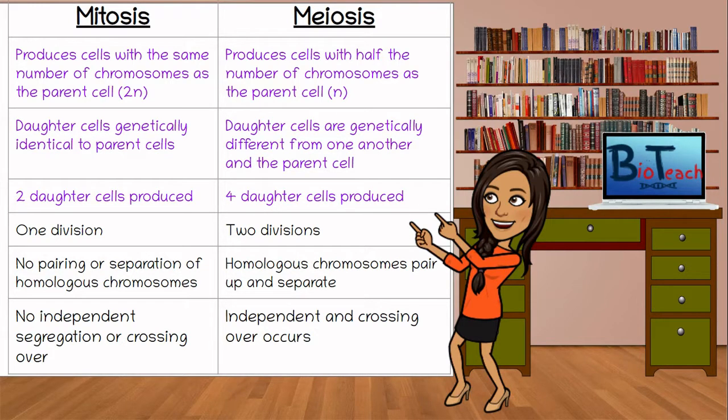The second and the third point here are looking at daughter cells. Mitosis gives two daughter cells which are genetically identical to the parent cell. Meiosis, on the other hand, gives four daughter cells, all of which are different from another.